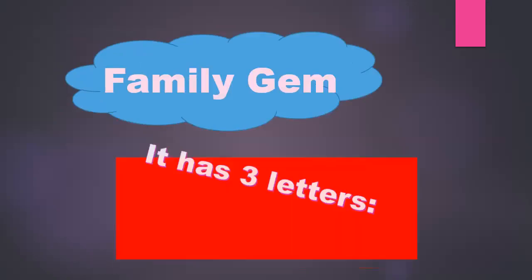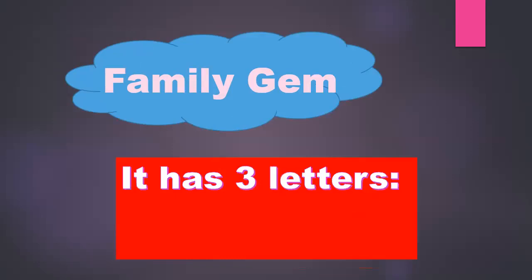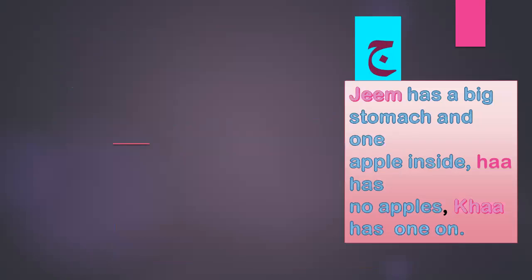Now we will study together the family of Jeem. It has three letters: Jim, Ha, and Kha. Jim has a big stomach and one dot inside. Ha has no dot. Kha has one dot on top.